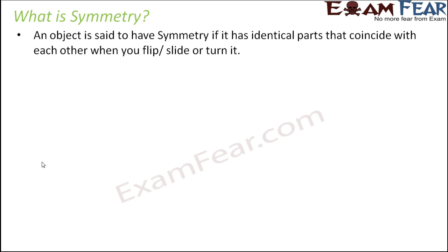An object is said to have symmetry if it has identical parts that coincide with each other when you flip, slide, or turn it. Let's look at some examples. Let's say you have this rectangular sheet of paper. We are going to do some activities using this sheet of paper. For better understanding, take a rectangular sheet of paper and try to do it on your own as you watch this video.